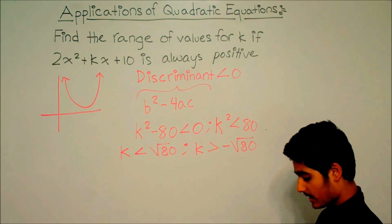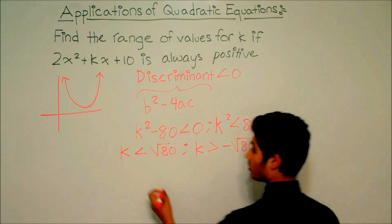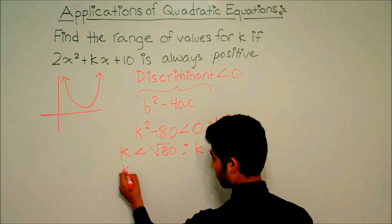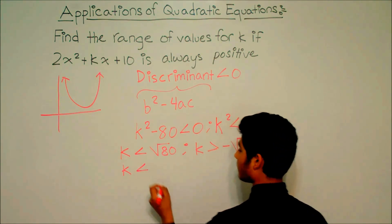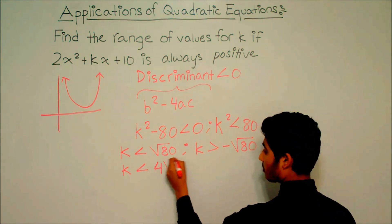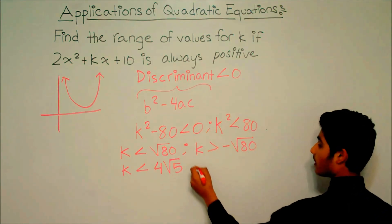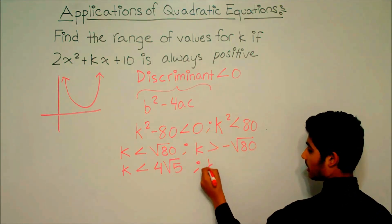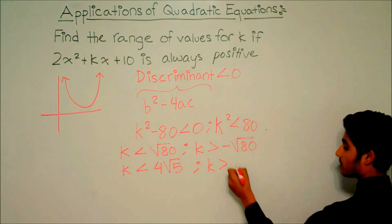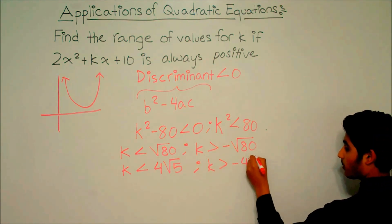Now let's simplify this down. k is less than, this becomes 4√5. And k is greater than, this becomes negative 4√5.